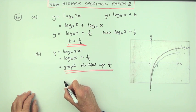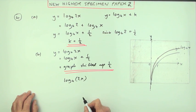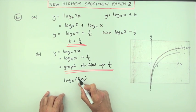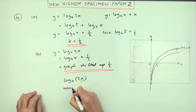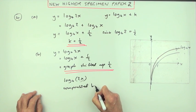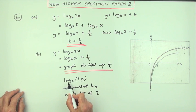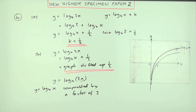Otherwise, log 4 of 2x is an alteration of the graph of log 4 of x where the 2x represents a compression by a factor of 2. So you could say the graph of y equals that is the graph of y equals log 4 of x compressed by a factor of 2.